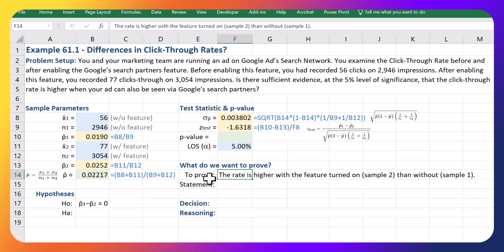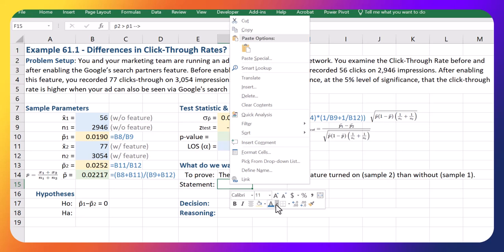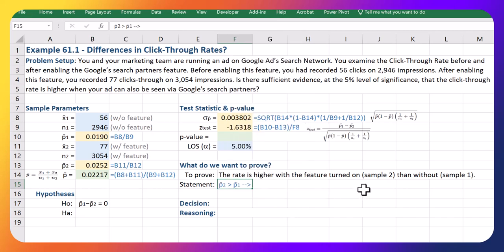Then we're going to think about how we defined our samples. Here's what we're trying to prove: we're trying to prove that the rate is higher with the feature turned on than without. So we think the rate, the click-through rate for sample two, is higher than sample one. That's what we're looking to prove at the five percent level of significance.